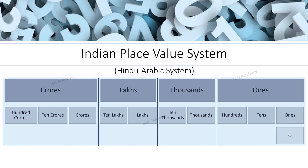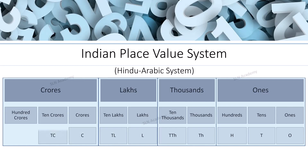We can use simple short forms to indicate these periods: O for ones, T for tens, HO for hundreds, TH for thousands, TTH for ten thousands, L for lakhs, TL for ten lakhs, C for crores, TC for ten crores, and HC for hundred crores.